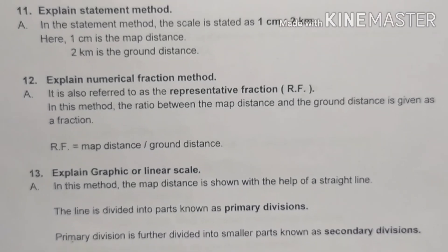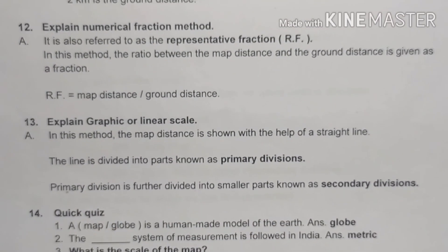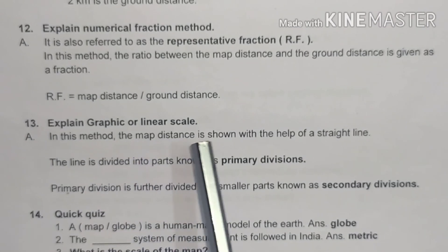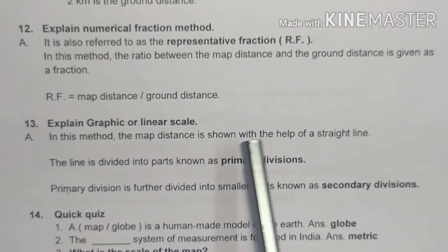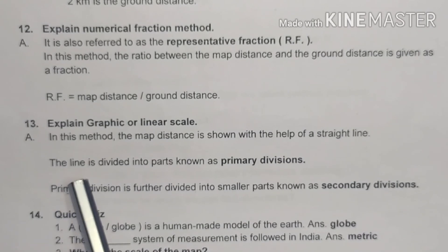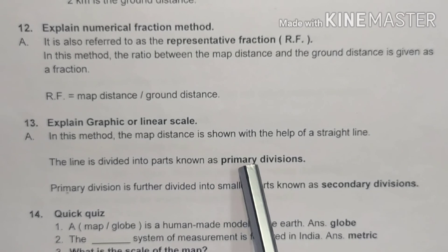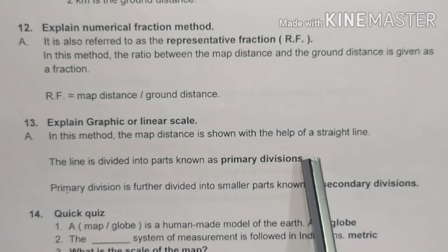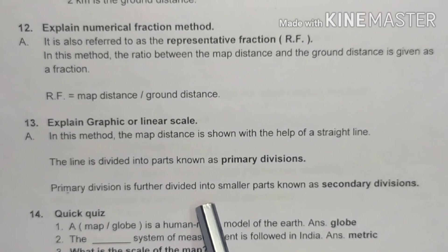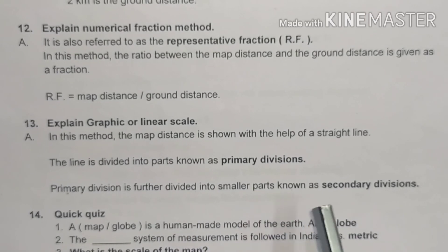Thirteenth question: explain the graphic or linear scale. In this method, the map distance is shown with the help of a straight line. The line is divided into parts known as primary divisions. Primary divisions are further divided into smaller parts known as secondary divisions.